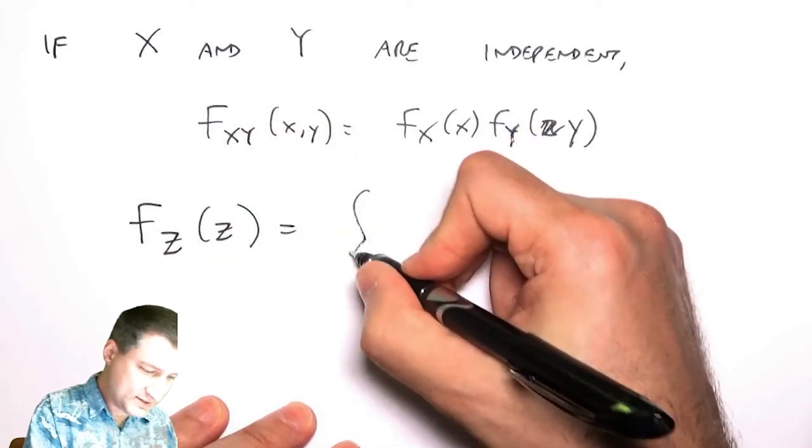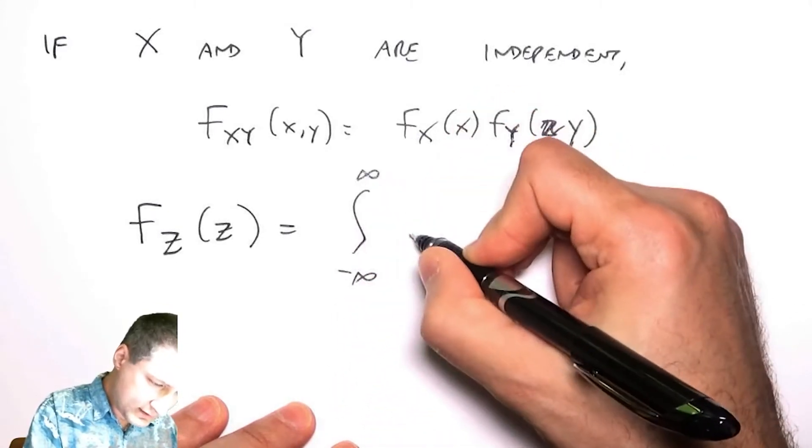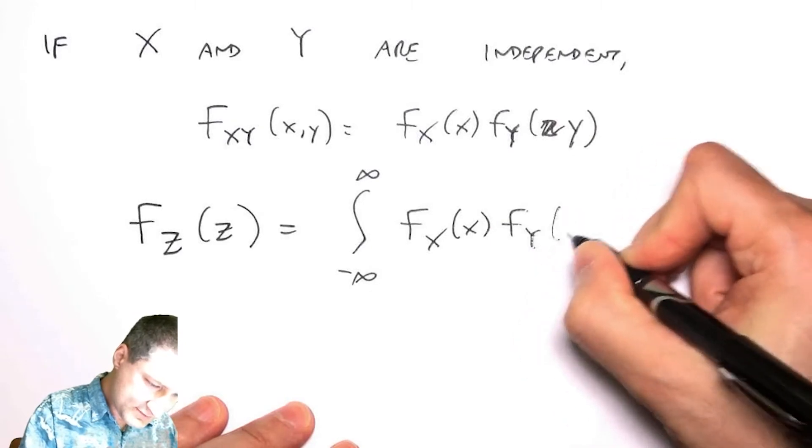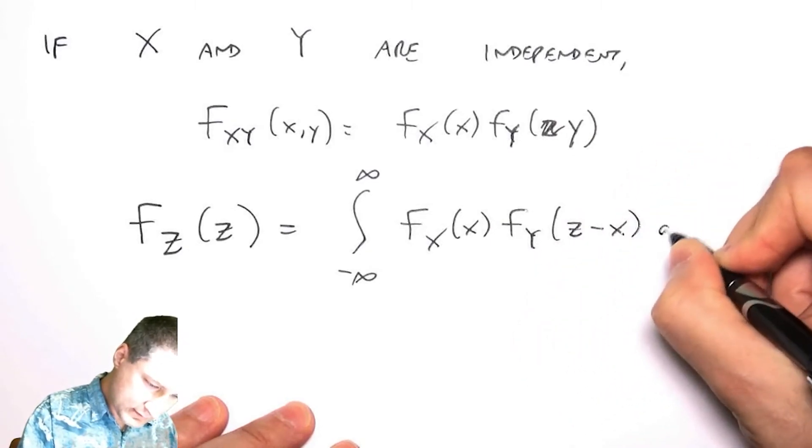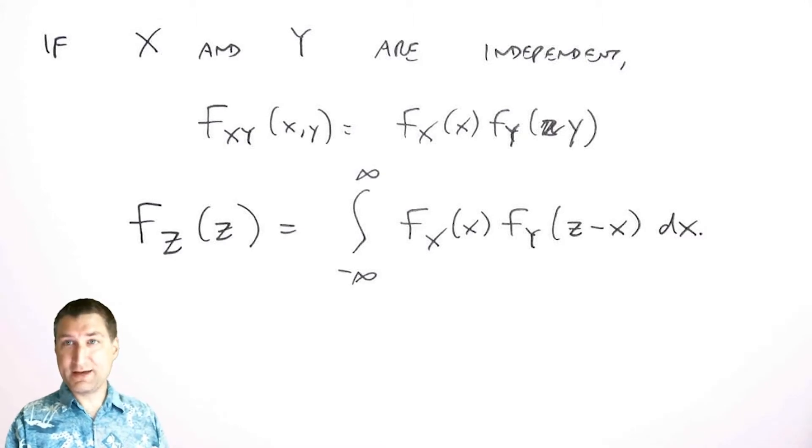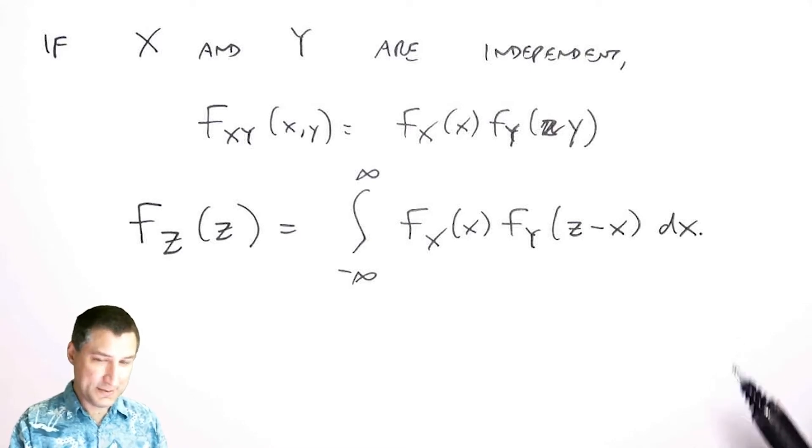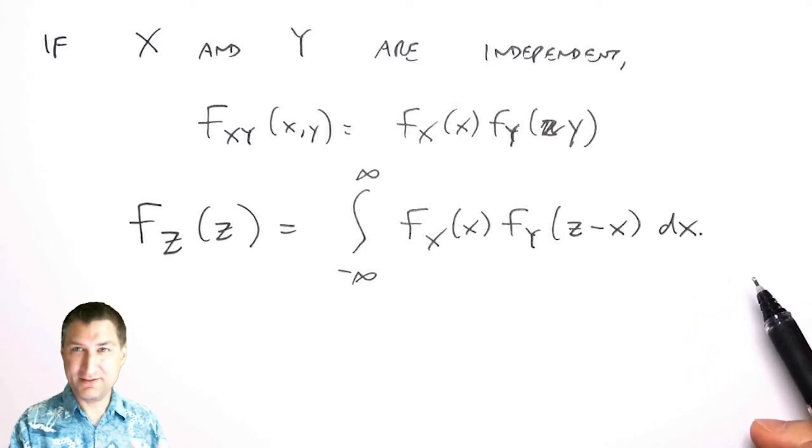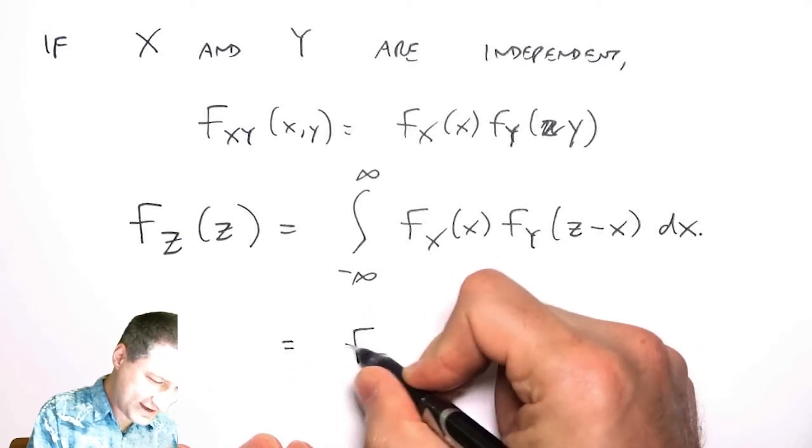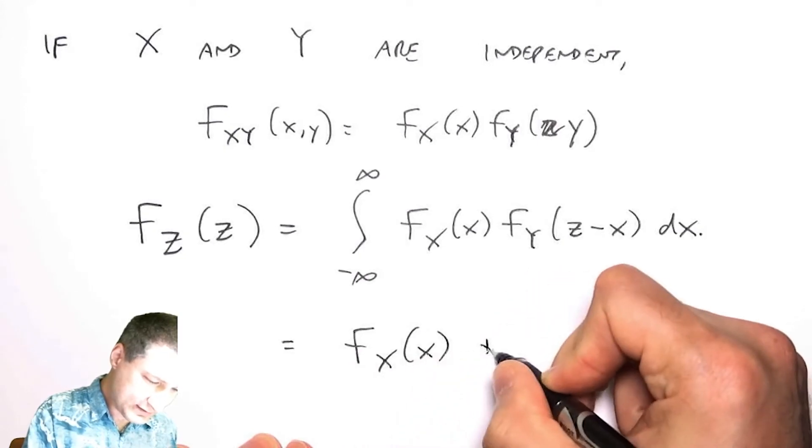And therefore the PDF of Z is this integral. I'm just going to separate out like this. So now that I've simplified things a little bit, and for those of you that are electrical engineers and have taken a signals and systems course, this is where you stop and say oh man, this is exactly a convolution integral.